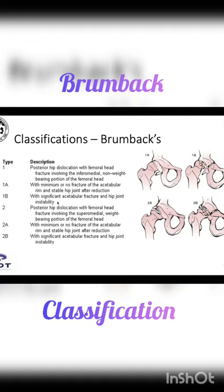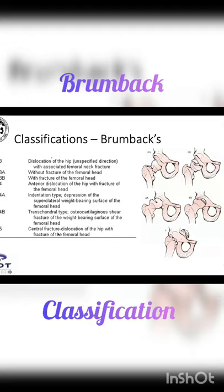Type 2 is the posterior hip dislocation with femoral head fracture involving the supermedial weight-bearing portion of the femoral head. In 2A, we have a minimum or no fracture of the acetabular ring. In 2B, we have a significant acetabular fracture with hip joint instability.